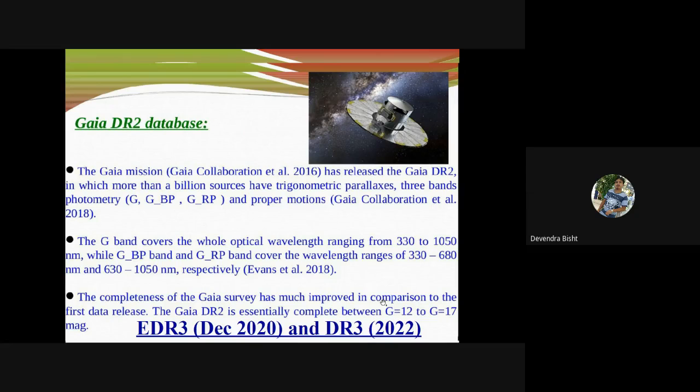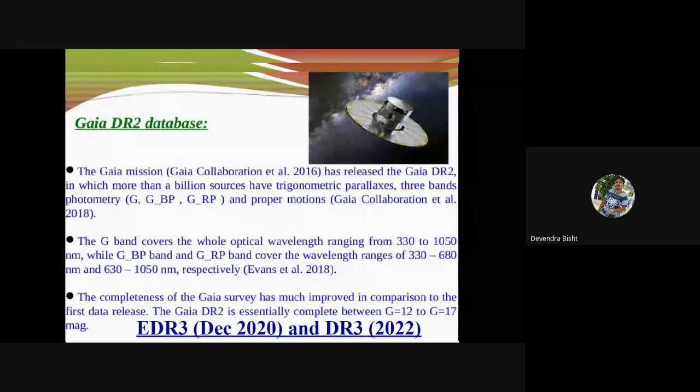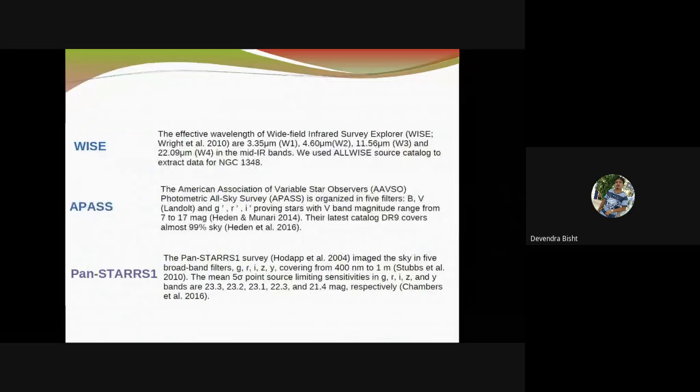This data is essentially complete between 12 to 17 magnitude in the Gaia band. The next upcoming data of this series, EDR3, will release in December 2020, and DR3 will release in 2022. These data are most awaited in order to understand the astrometry, photometry, and spectroscopy of various sources. With Gaia DR2 we have used some other datasets: WISE, APASS, and Tycho stars data.